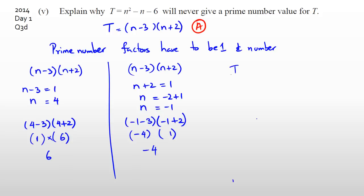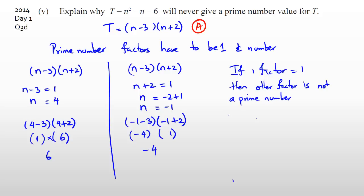You can also guess and check by putting in values of n, but you need some sort of justification. If one factor equals 1 and the other factor is not prime, then T can never be prime — that's what you need to state. For excellence, you need that full justification. If you have a rough idea but don't fully justify it, you're probably looking at a merit. Even if you can't answer it fully, try to factorize and get something out of it.